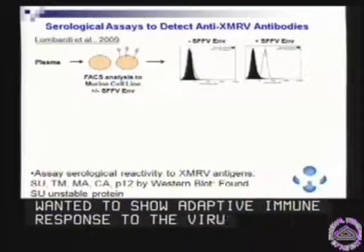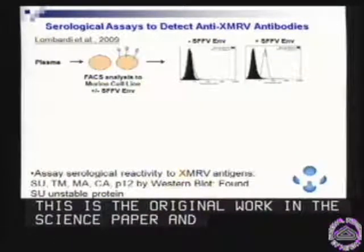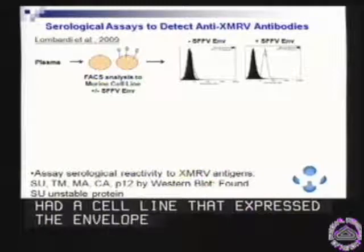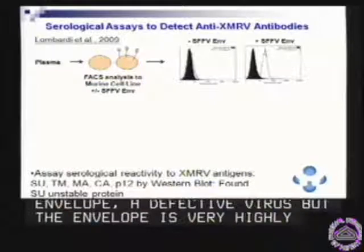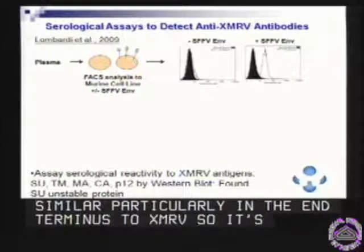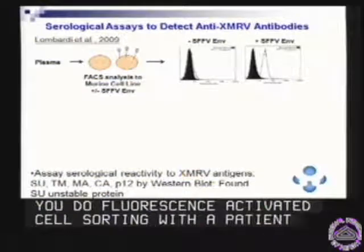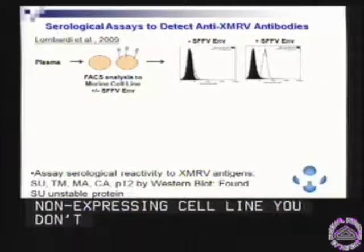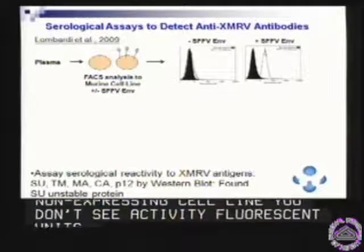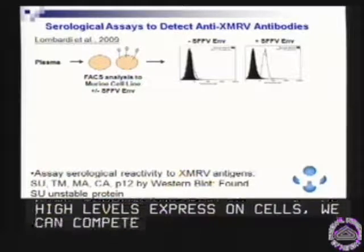So we looked for antibodies — specifically envelope antibodies — and this is the original work in the Science paper. Sandy had a cell line that expressed the spleen-focused-forming virus envelope, which is a polytropic, xenotropic-like envelope. It's actually a defective virus, but the envelope is very highly similar, particularly in the N-terminus, to XMRV. When you do fluorescence-activated cell sorting with patient plasma diluted 1 to 100, you see no activity against the non-expressing cell line, but when you look at the cell line expressing envelope, you see high levels of envelope expressed on all the cells, and we could compete this back with both the protein and the monoclonal antibody.